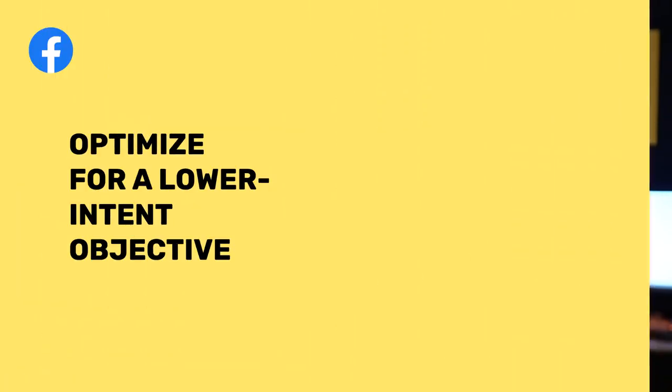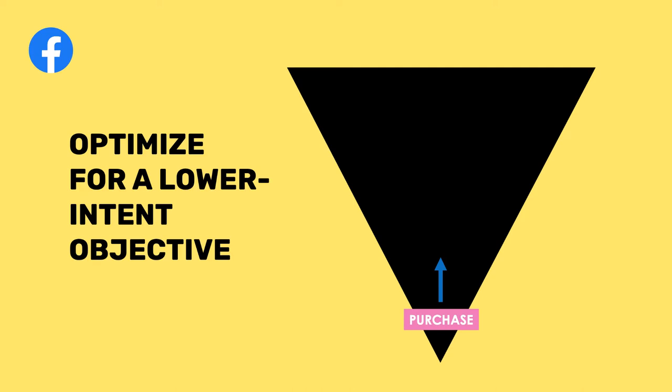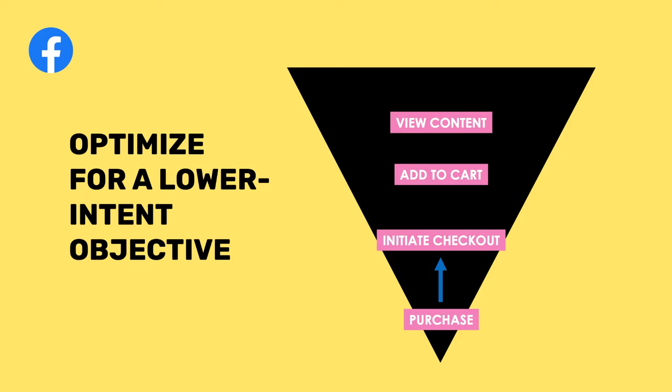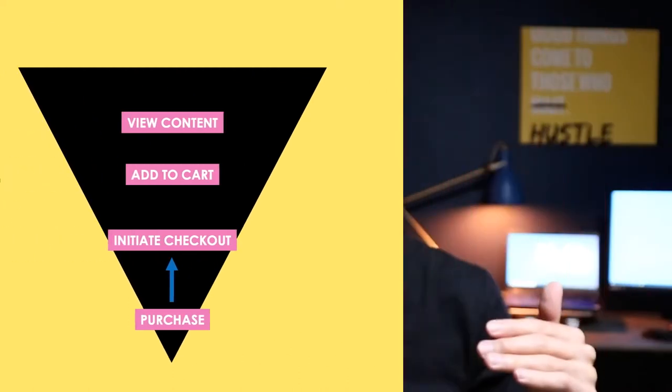Here's something you could do: instead of optimizing for sales, you can optimize for a lower-intent objective that still has some level of intent. The sale is the last part of the journey. Before that, somebody has to initiate checkout, someone has to add the product to the cart, and someone actually has to go to a product page and look at a product. You could even start optimizing for view content, just to maximize for an audience that's willing to actually look at your product pages. Run that for a week or two, depending on how much money you're spending, and aim to get at least 500 people to the website.